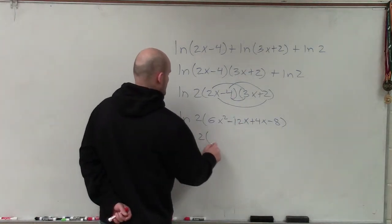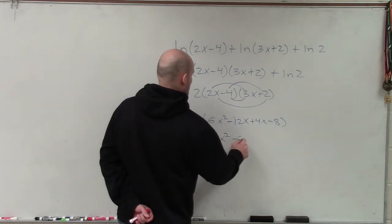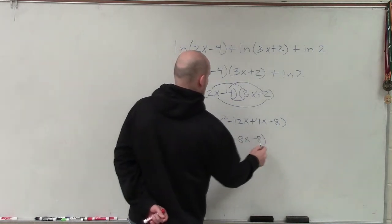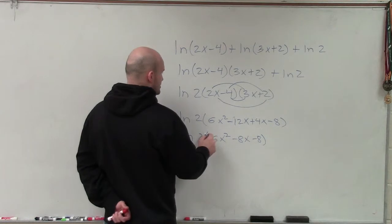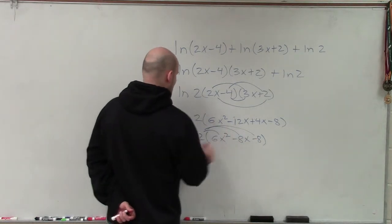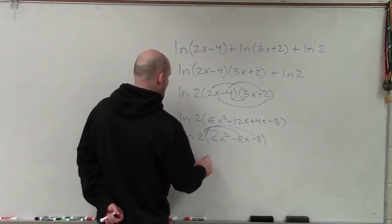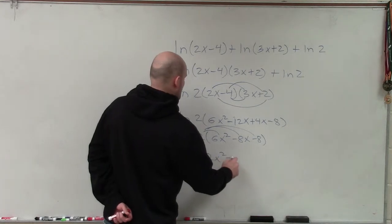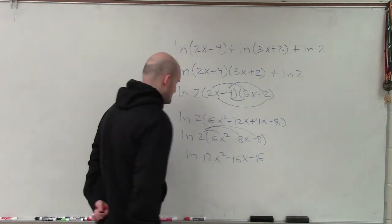So I'd have ln of 2 times 6x squared minus 8x minus 8. And now I can distribute the 2 into each term. So my final answer is ln of 12x squared minus 16x minus 16.